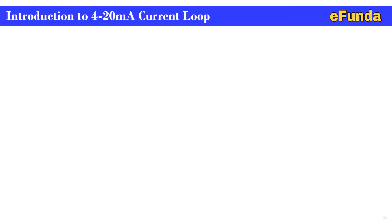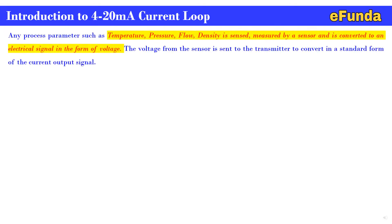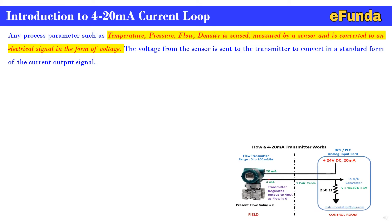Introduction to 4 to 20 milliamp current loop: any process parameter such as temperature, pressure, flow, or density is sensed and measured by a sensor and converted to an electrical signal in the form of voltage. The voltage from the sensor is sent to a transmitter to convert it into a standard current output signal. One can refer to the animation where the transfer of current from the field sensor is sent to the control room.